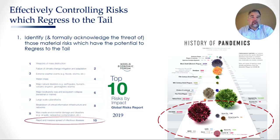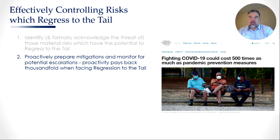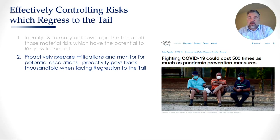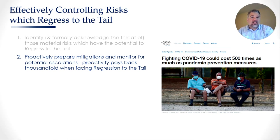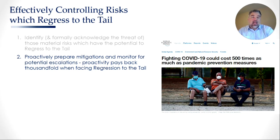We can't be doing that for other macro threats. So the second point, building on the first, is that once we've identified and acknowledged the threat, we need to proactively prepare mitigations and monitor for potential escalations. Proactivity pays back a thousandfold when facing regression to the tail. One report I particularly like from the World Economic Forum states that it's going to cost us roughly 500 times more to deal with the aftermath of the pandemic than it would have cost to prevent or mitigate it, knowing it was coming. There was no excuse for being this unprepared — in future risks that regress to the tail, proactivity is worth its weight in gold.